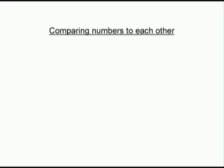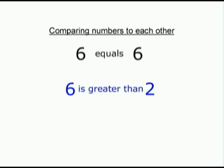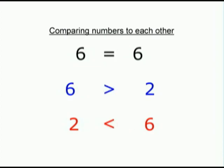There are three ways two numbers can be related to each other. They can be equal to each other, one can be larger than the other, or one can be smaller than the other, depending on the order in which you read them. When comparing two numbers to each other, we use symbols instead of words because it's easier to write symbols.